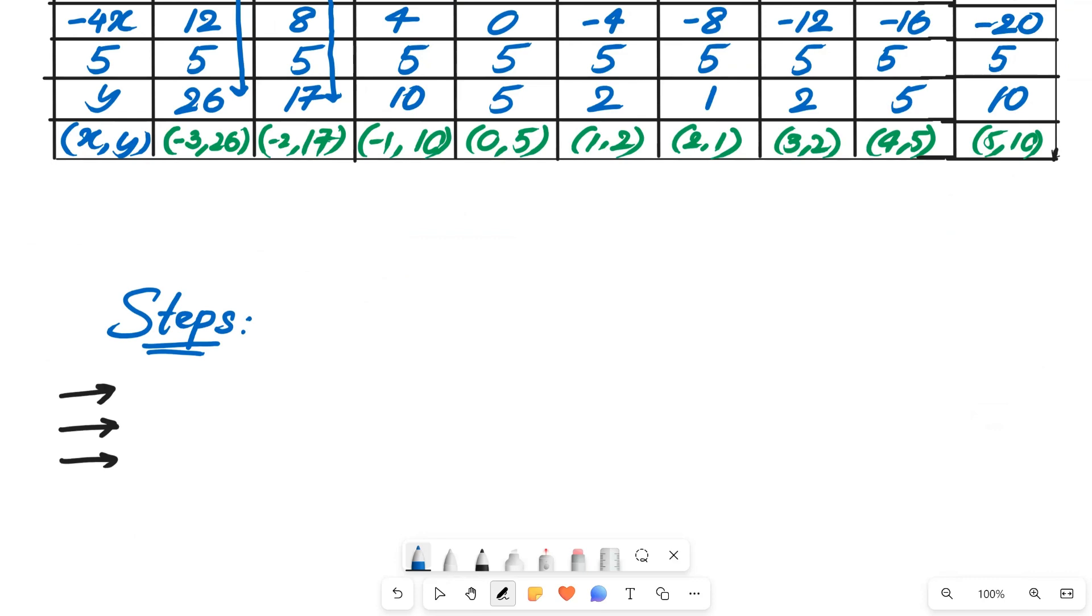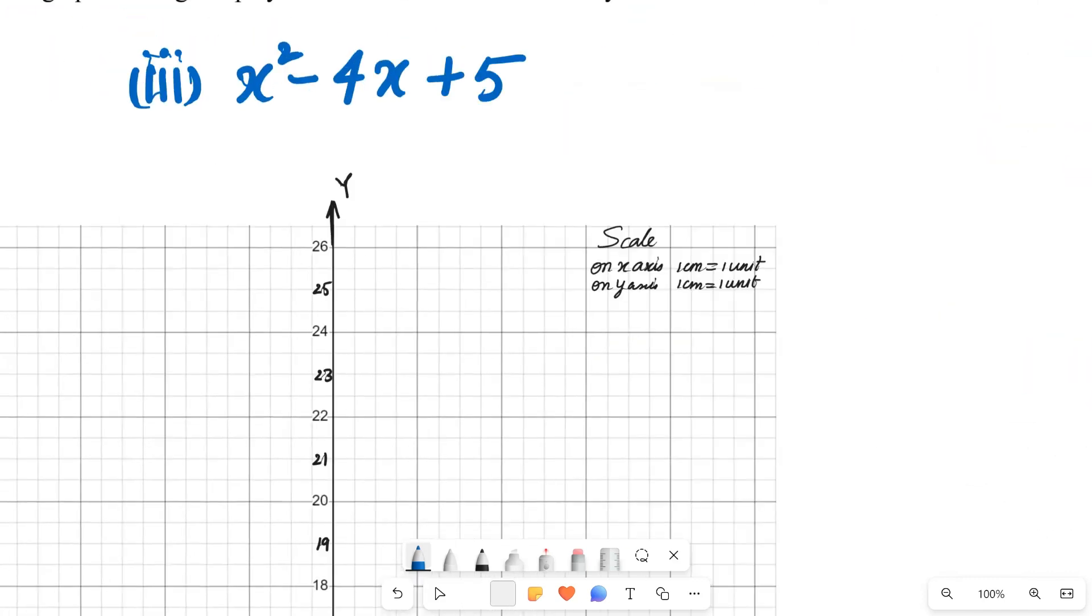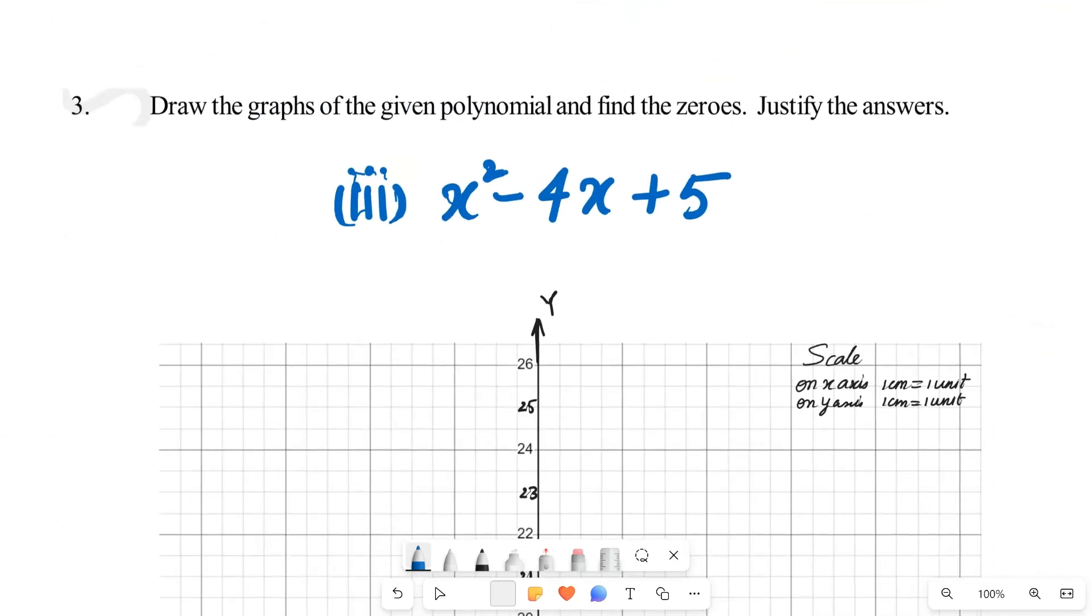I will type them in the description. So from our understanding from the first question and third question: if graph doesn't intersect x-axis then it means that the quadratic polynomial has no zeros. That's it. Hope you understood the question. Tomorrow we'll have the next one.